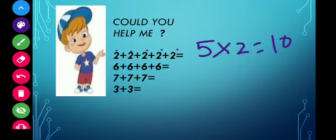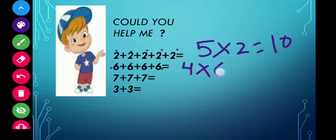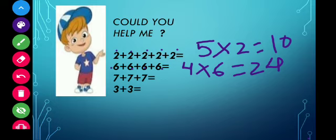Children, count the number of times six appears — that is the total number of groups: one, two, three, four. Six appears four times, meaning four groups. In each group you have six objects. So the answer is four multiplied by six equals twenty-four. You can also write six multiplied by four equals twenty-four. The answer remains the same.